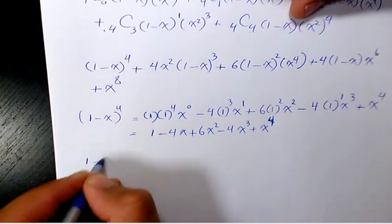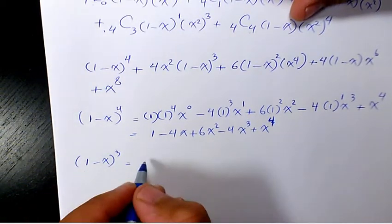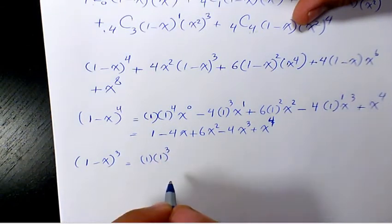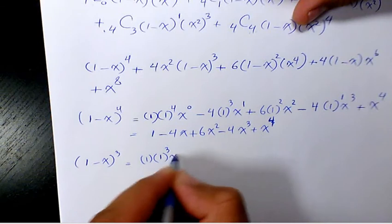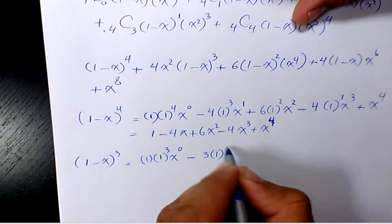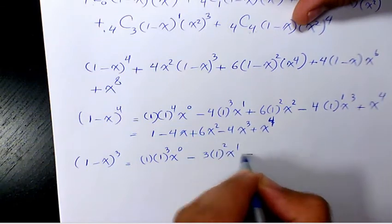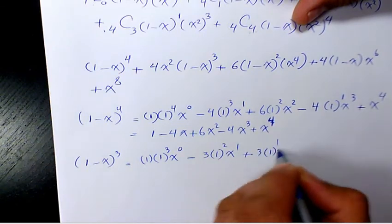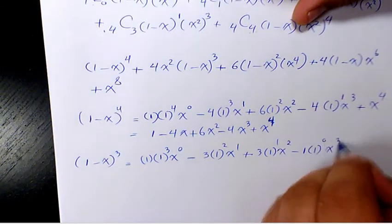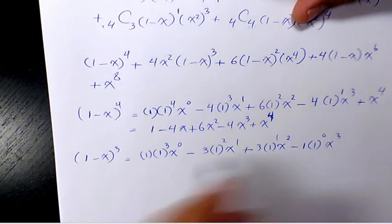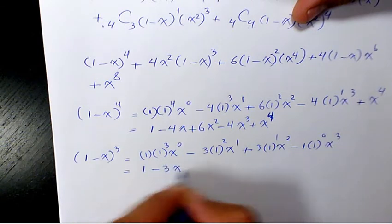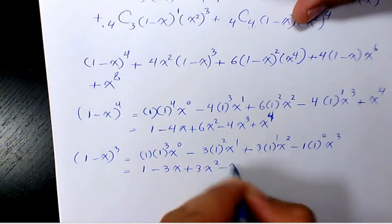What about (1 minus x) cubed? That's going to be 1 times 1 to the power of 3 times x to the power of 0, minus 3 times 1 to the power of 2 times x to the power of 1, plus 3 times 1 to the power of 1 times x to the power of 2, minus 1 times 1 to the power of 0 times x to the power of 3. So simplified that's going to be 1 minus 3x plus 3x squared minus x cubed.